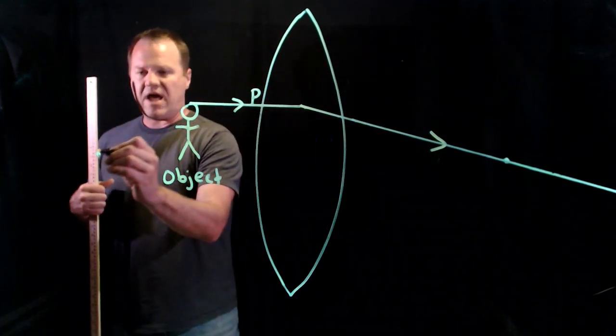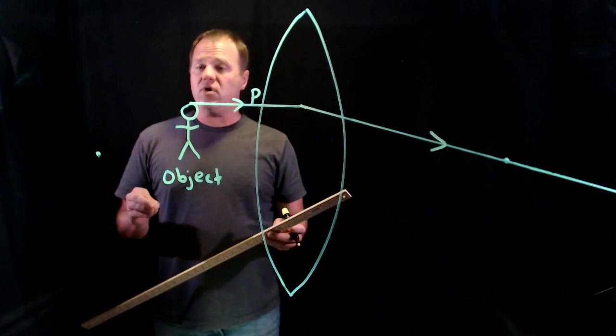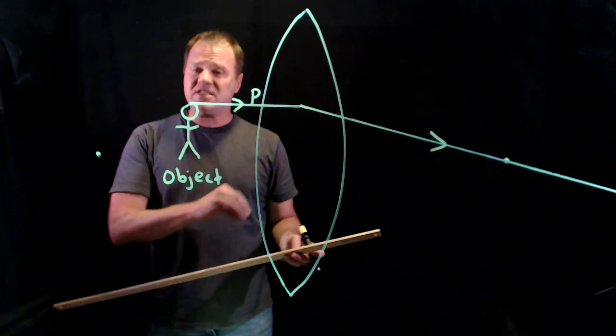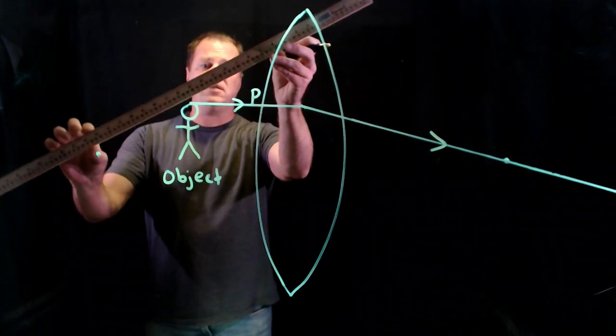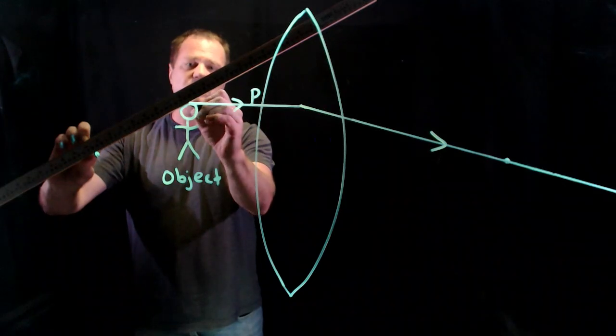So what you do for the situation when the object is inside the focal point for a biconvex lens is you line up the focal point and the source of light.